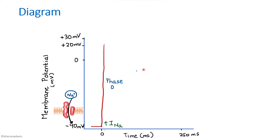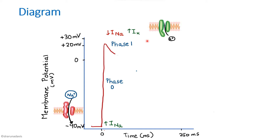In phase 1, initial rapid repolarization: once the potential reaches around plus 30 millivolts, the sodium channels begin to close, so there is a decrease in sodium current. Along with that, there is increased potassium efflux due to opening of potassium channels. So the decrease in sodium current and increase in potassium current together cause rapid repolarization.